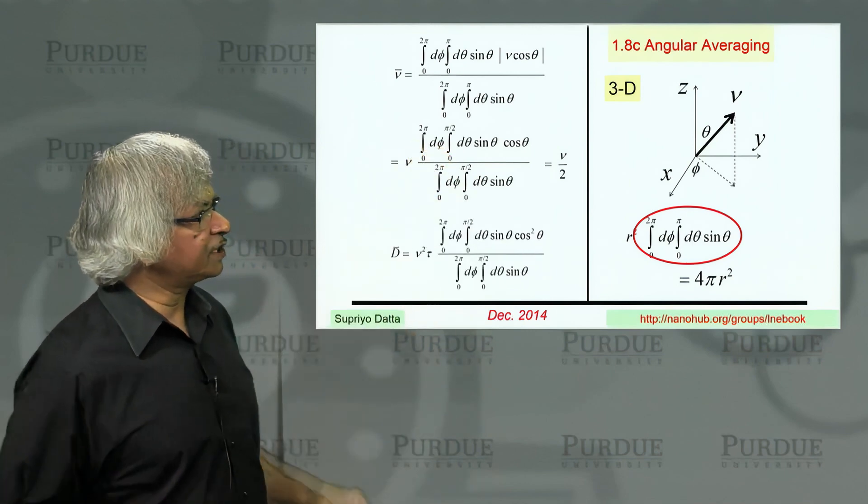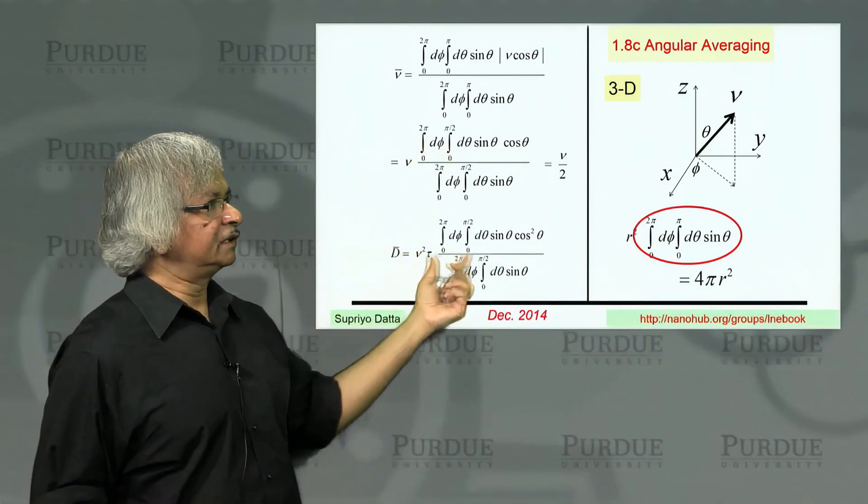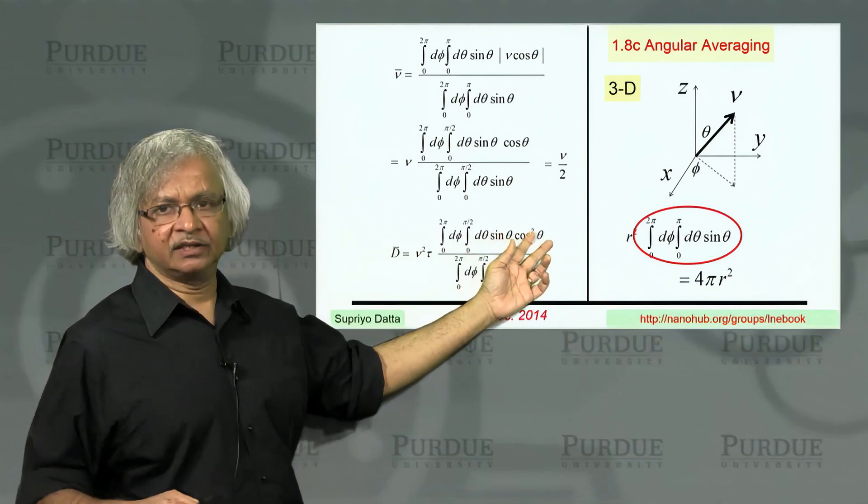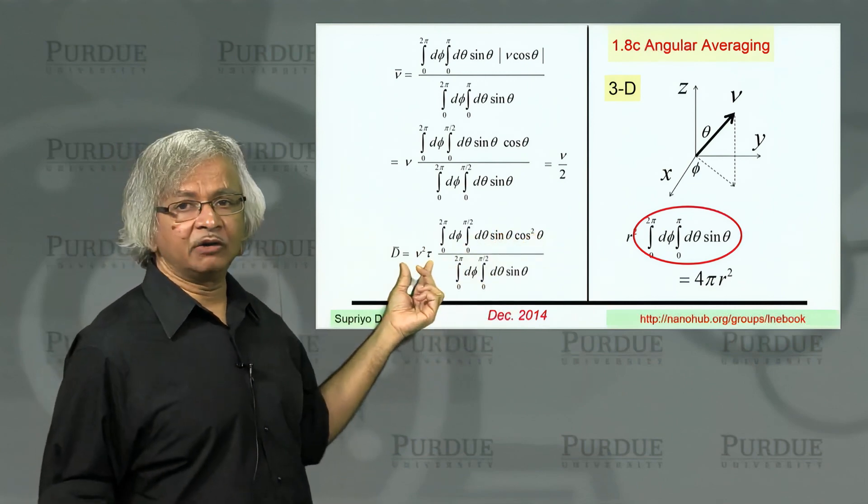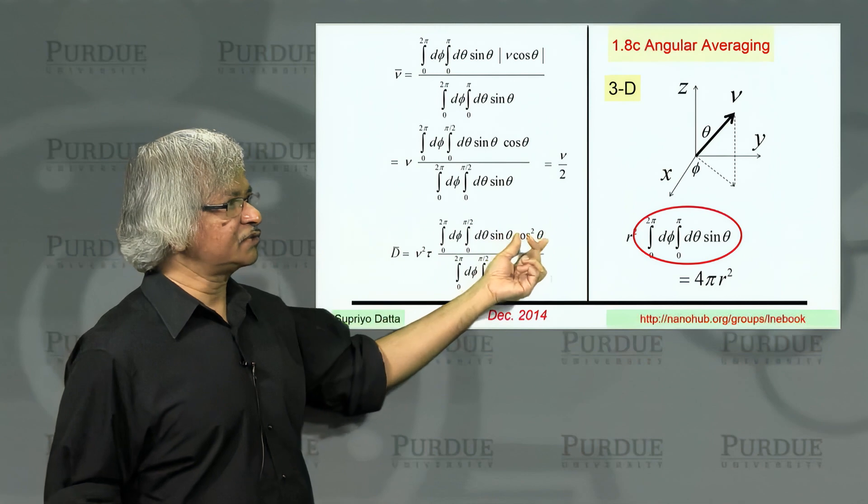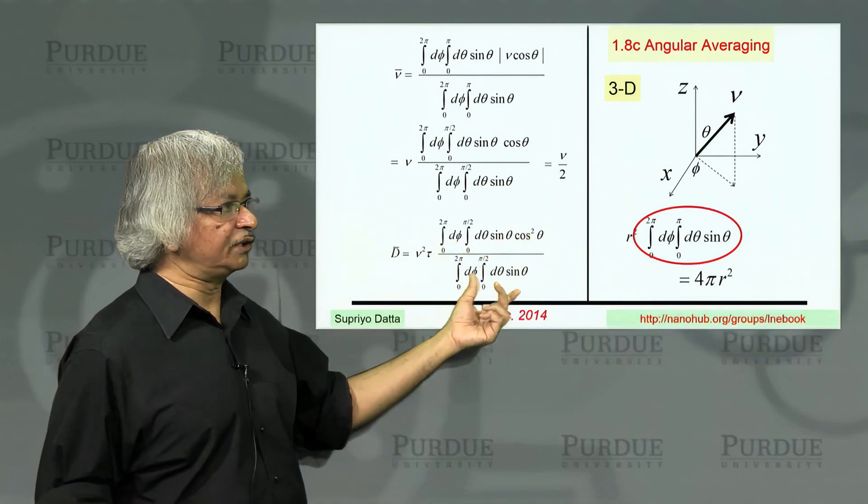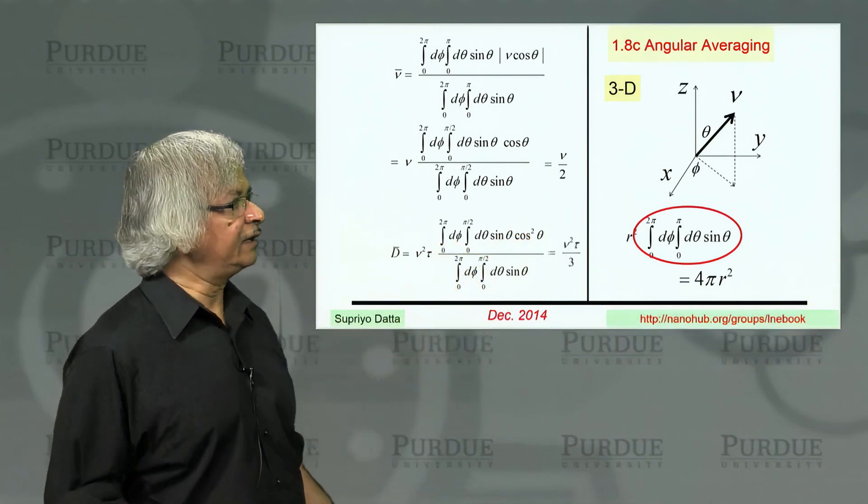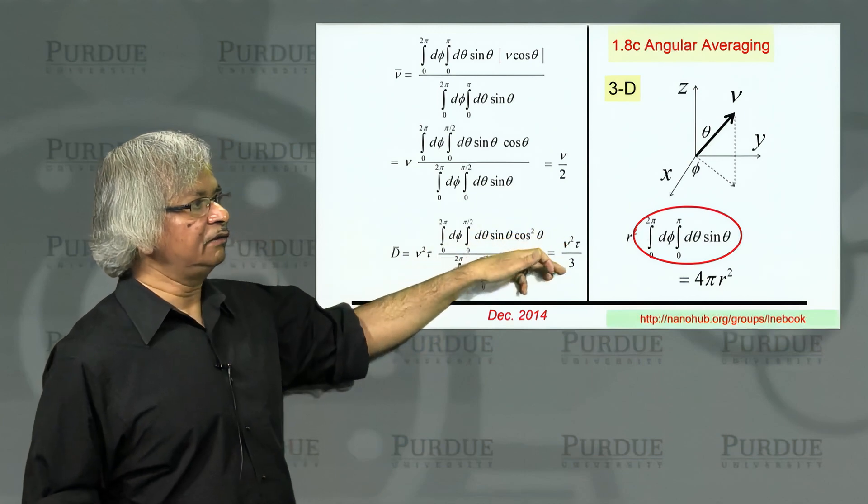Now if you want the diffusion coefficient, again same story. Now it's v square cosine square theta times tau. The v square tau is pulled out. So you have cosine square theta which has to be integrated over the solid angle. And this will give you v square tau over 3.